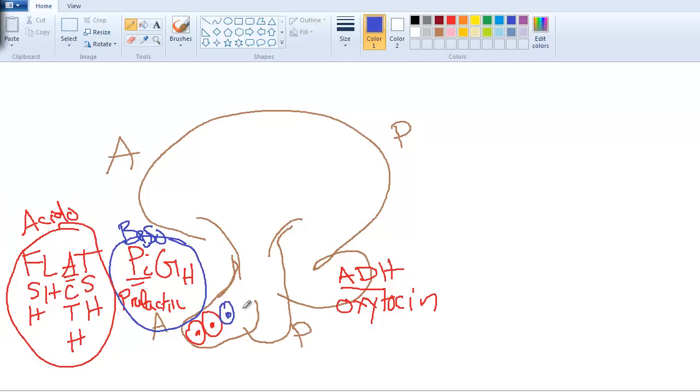Up in the hypothalamus, you have an area here of a bunch of cells, and this area is called the arcuate nucleus. Remember, a ganglion is a group of cells. You don't use the word ganglion in the central nervous system, you say nucleus. This nuclei is secreting dopamine.